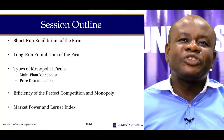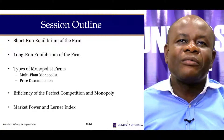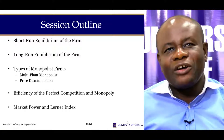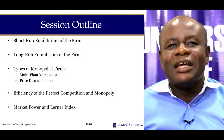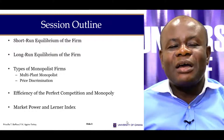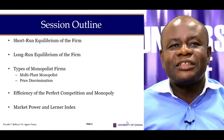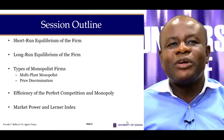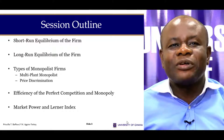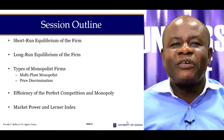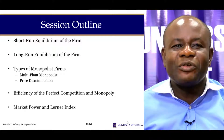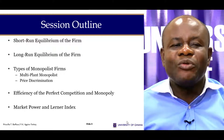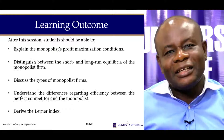We will start with the short-run equilibrium of the firm and proceed to the long-run equilibrium. Then we will look at three types of monopolies in this session: price-discriminating monopolies and multi-plant monopolies. We will also look at efficiency of the perfectly competitive market and that of the monopolies, and analyze market power and the Lerner index.